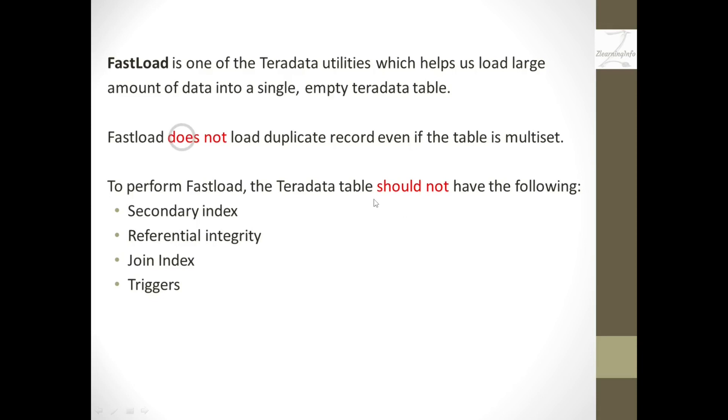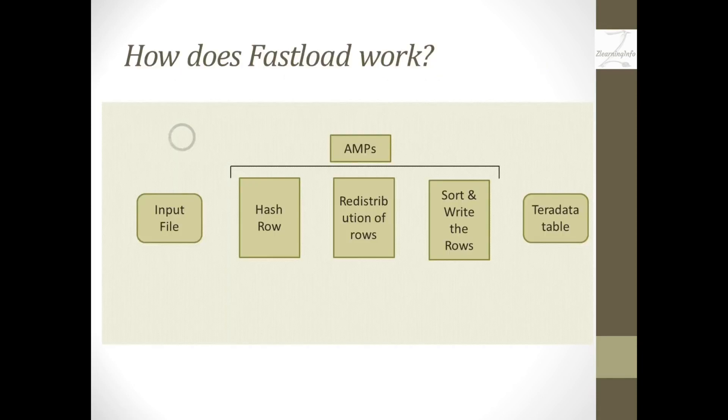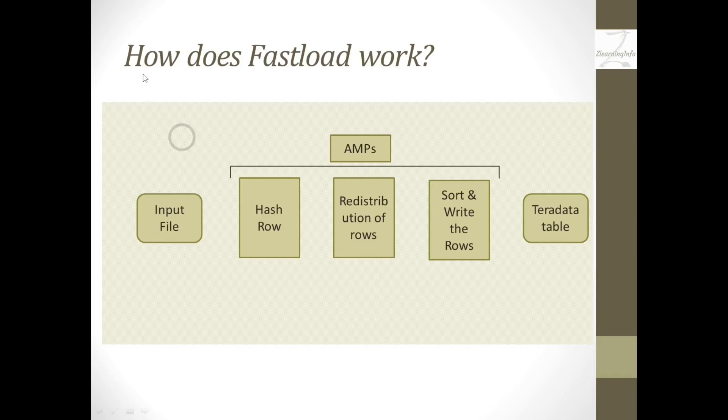Now let us see how FastLoad works. Here we have an input file, AMPs, and a Teradata table. Initially, FastLoad will take the rows of data from the input file and send them to AMPs. Each AMP will hash the rows of data and then redistribute the rows to the correct AMPs.